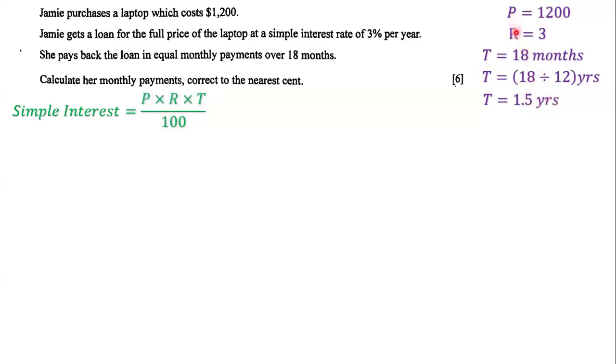Now we know what P, R, and T are. Let's substitute those values into the equation. Simple interest equals 1,200 times 3 times 1.5, all over 100.